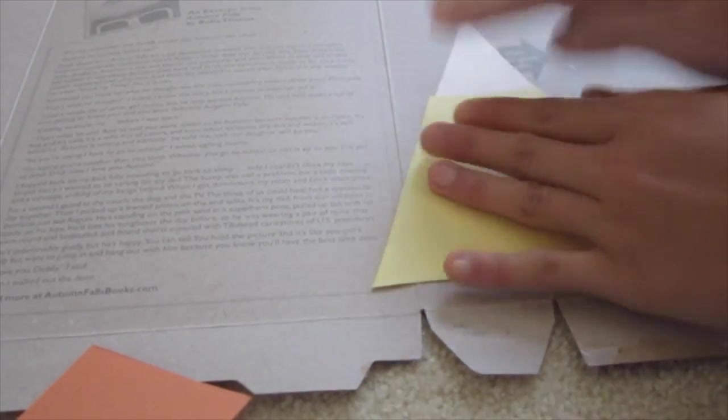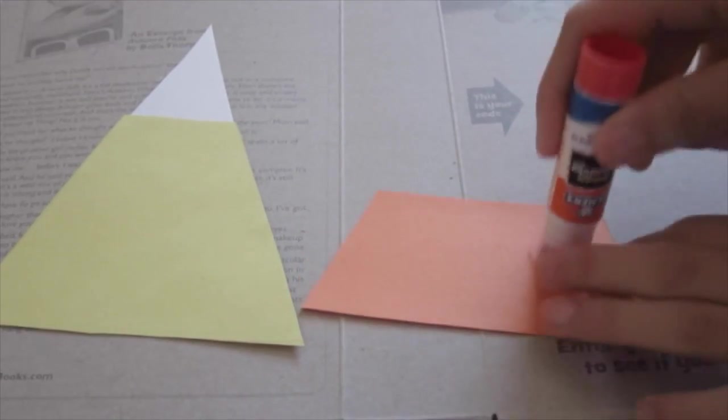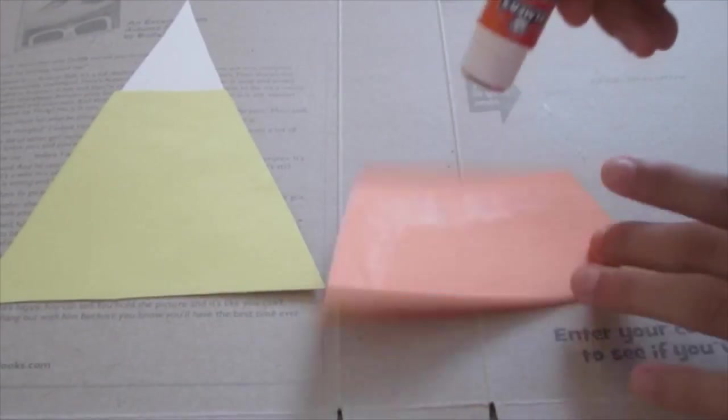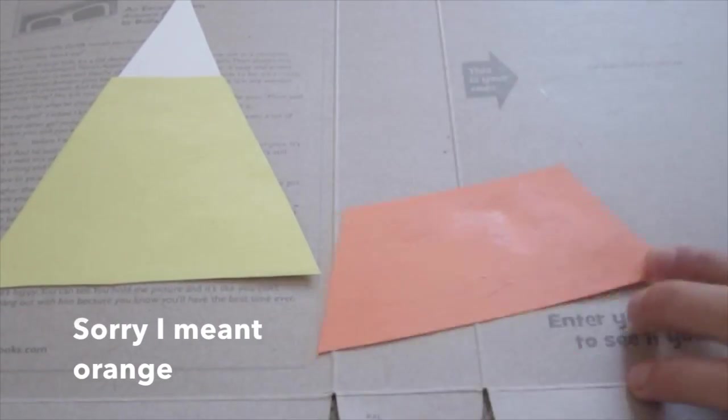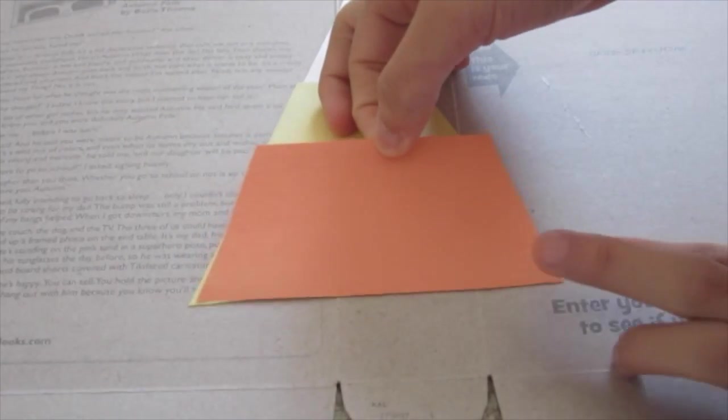Place the yellow one on the bottom of the triangle to act as the yellow part of the candy corn. Then grab the orange one and do the same thing - put it also on the bottom. That will act as the orange part of the candy corn.